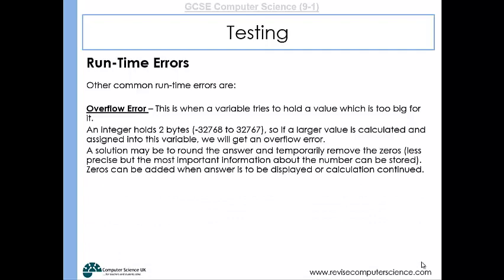A solution might be to round the answer temporarily removing the zeros. It's less precise but at least the number can be stored. And then those zeros can be added later either when displaying the answer or when carrying on with the calculation.